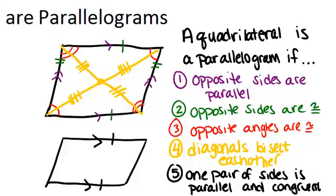You will use this information in a situation where you're given a shape and you're trying to prove that it's a parallelogram. If you can show any of these five things are true, then that's enough to have shown that the shape must be a parallelogram.